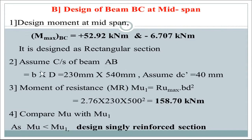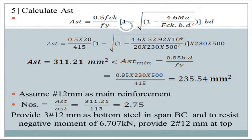Span BC is designed as a rectangular section using the same cross-section. Moment of resistance is the same; since design moment < MU1 for balanced section, we design a singly reinforced section. AST = 311.21 mm², which is greater than AST minimum. Using 12 mm diameter bars, number = 2.75, so provide 3 bars of 12 mm at the bottom in span BC. To resist negative bending moment of 6.707 kNm, provide 2 bars of 12 mm at the top — designed as a doubly reinforced section.